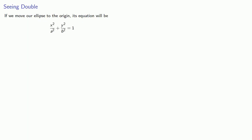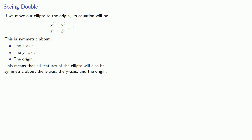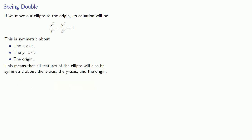Now, if we move our ellipse to the origin, we'll have it in this form. Let's talk symmetry. This equation gives us a graph that is symmetric about the x-axis, the y-axis, and the origin. And what this means is that all features of the ellipse will also be symmetric about the x-axis, the y-axis, and the origin — and this includes the focus.